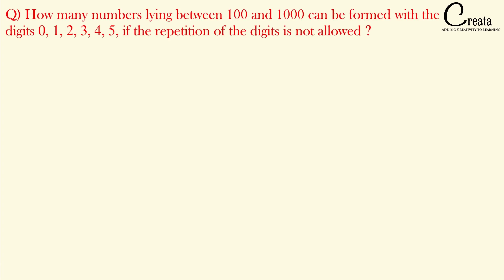The next question is slightly tricky, so pay full attention. How many numbers lying between 100 and 1000 can be formed with the digits 0, 1, 2, 3, 4, 5 if the repetition of the digits is not allowed? Note that we have to find numbers between 100 and 1000, ranging from 101 to 999. Basically, all these numbers are 3-digit numbers.